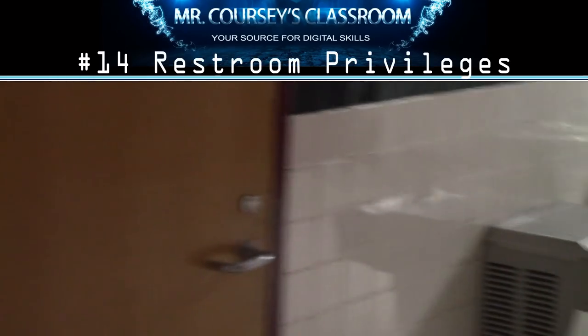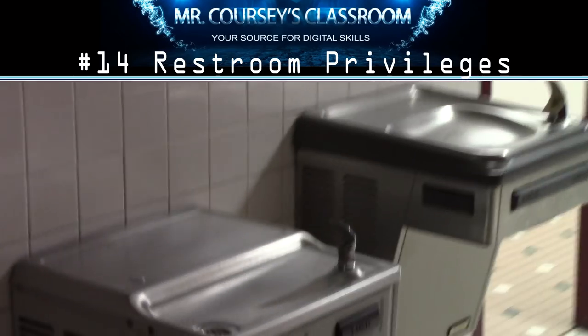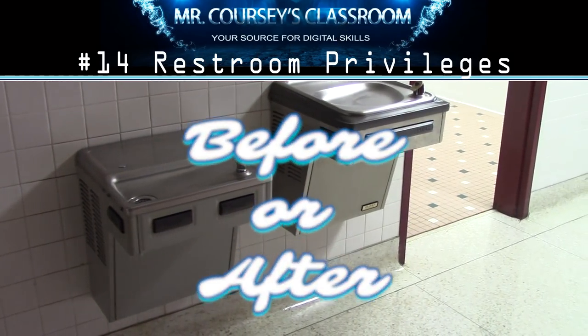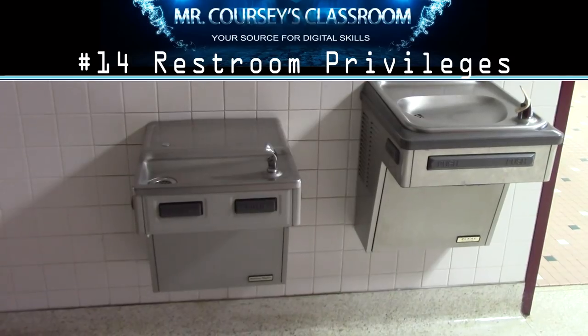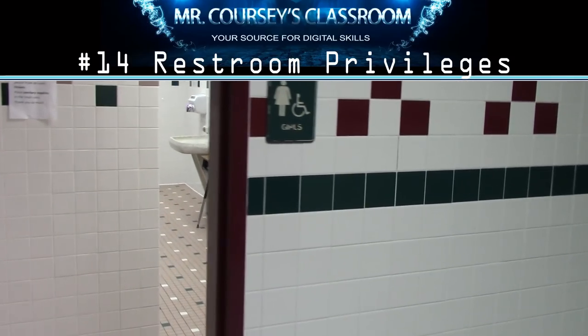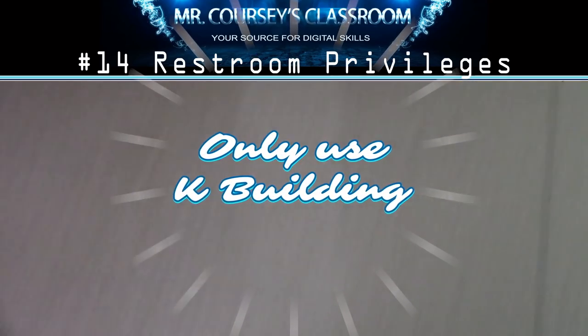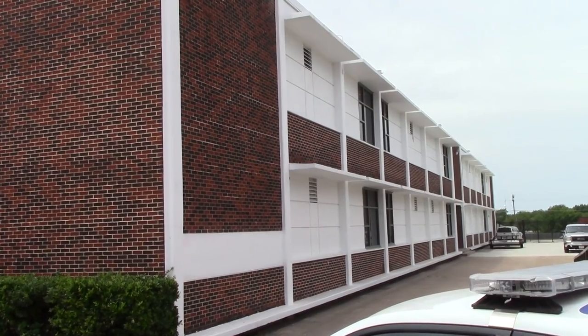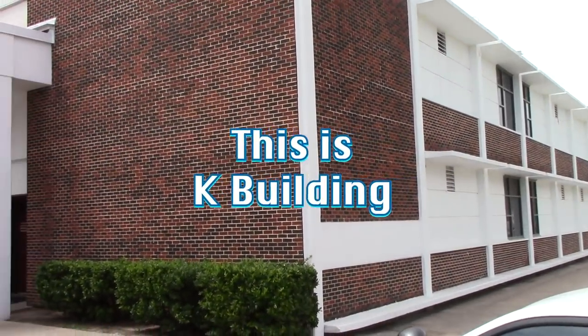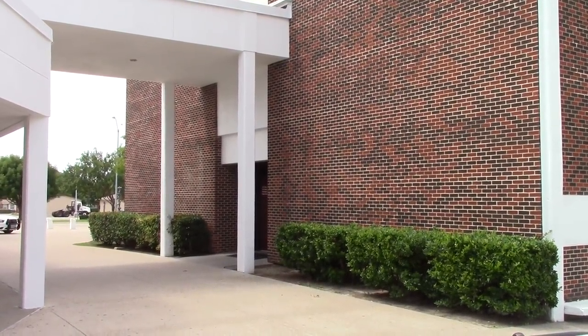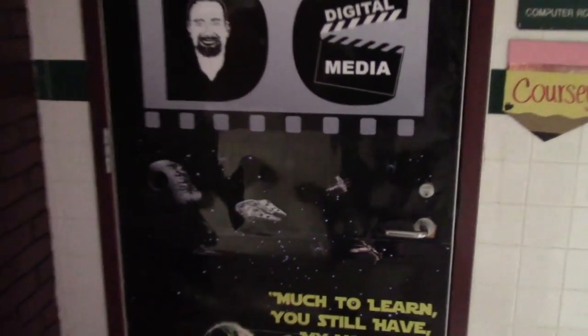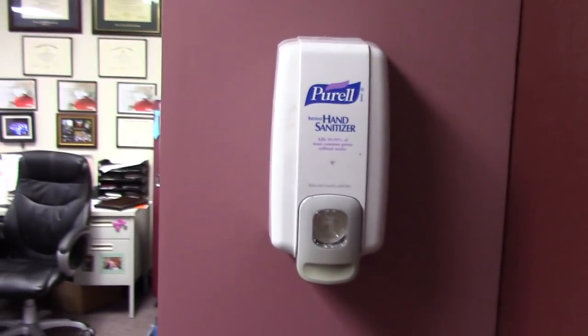Let's talk about restroom privileges. All students are encouraged to use the restroom before or after class. If you need to use the restroom during class time, you must only use the restroom in K Building down the hall. Students found somewhere other than what is written on their pass are subject to an office referral. This is a privilege, so don't take advantage. The hand sanitizer is located at the front of the class for your use after you return from the restroom.